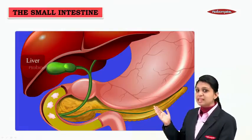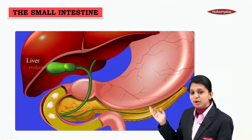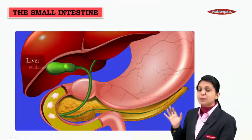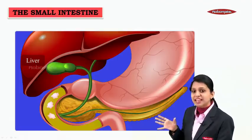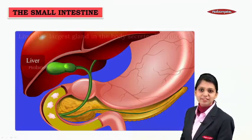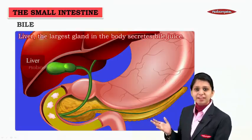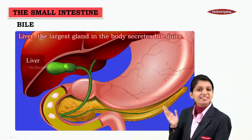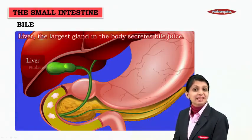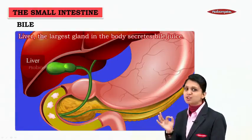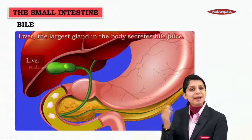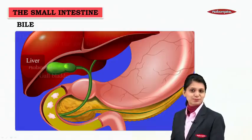As we said, liver. Here we see the red large gland called the liver. Liver is the largest gland in the body, which secretes a juice called bile juice.